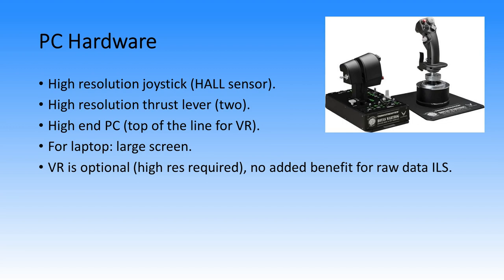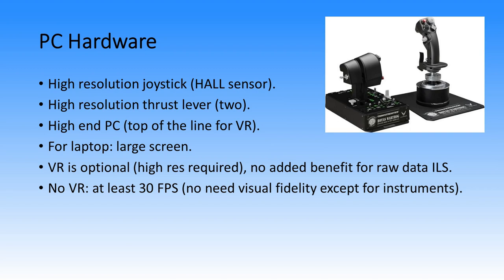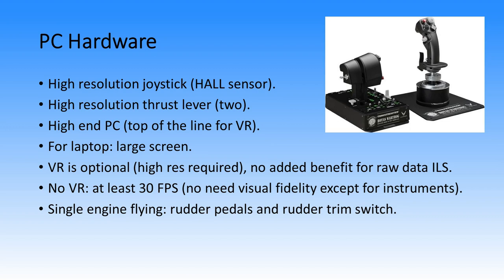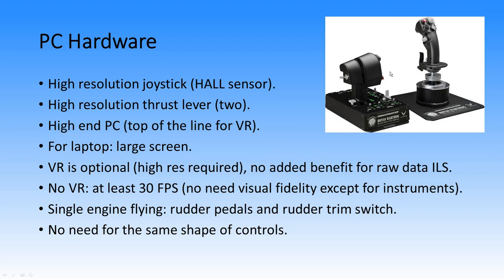Using VR is optional. If you do want to use VR, you need a very high-resolution head-mounted display. It does not provide any added benefit for flying a Raw Data ILS, though. If you don't use VR, aim for at least 30 FPS. You can turn down visual fidelity except for instrument quality — keep texture resolution high. If you want to fly single-engine Raw Data ILS, you will need rudder pedals and a rudder trim switch. There's no need for the exact same shape of controls — it's unlikely you can find the exact same joystick and throttle lever, but if you do, great; if not, that's not a problem.